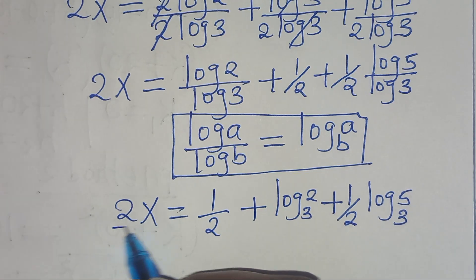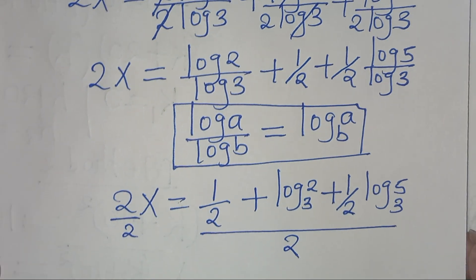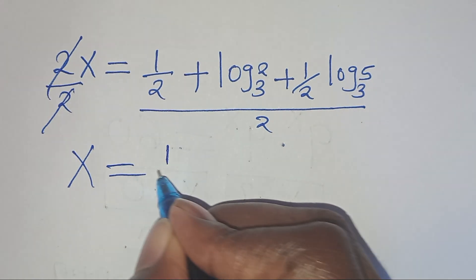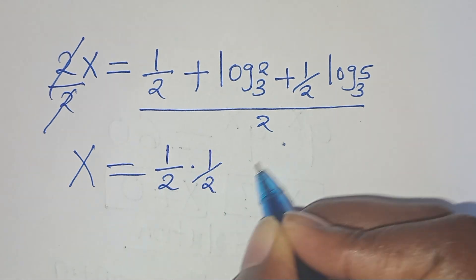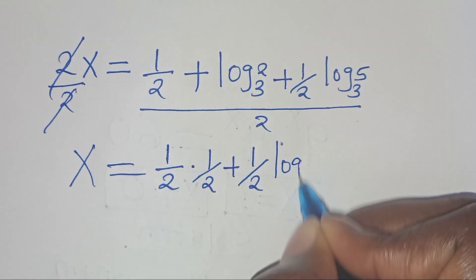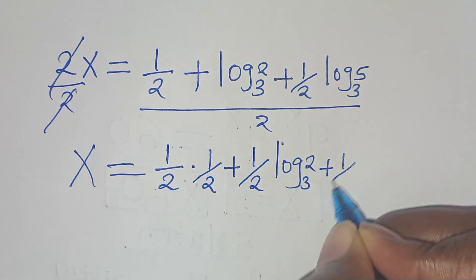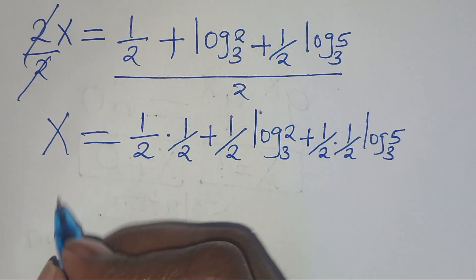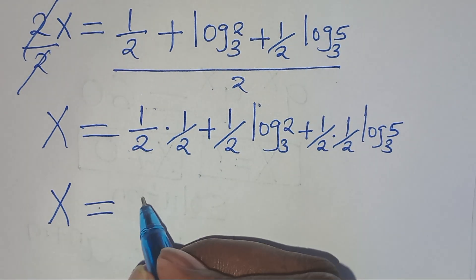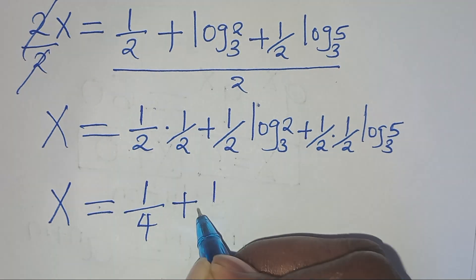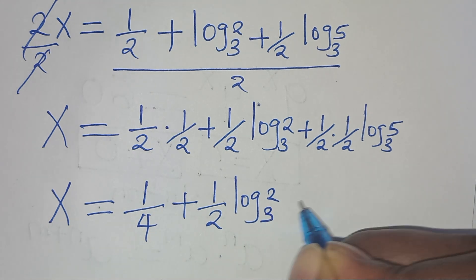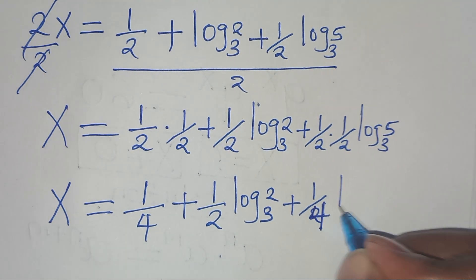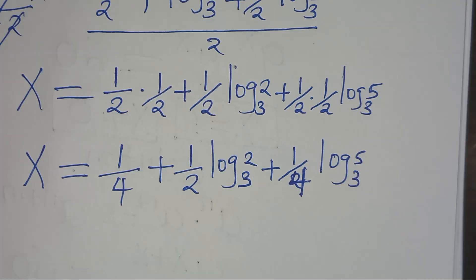The next step: let's divide both sides by 2, simplifying each term by 2, so that x is equal to one half times one half, plus one half times log 2 to base 3, plus one half times one half times log 5 to base 3. This implies x is equal to 1 over 4, plus one half log 2 to base 3, plus 1 over 4 times log 5 to base 3. So this is the value of x.